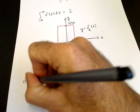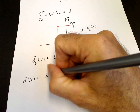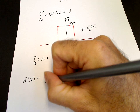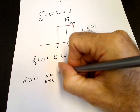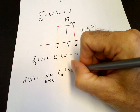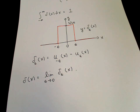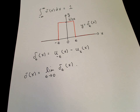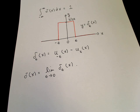The delta function is the limit as epsilon goes to zero of delta_epsilon of x. So if you have a hard time picturing the delta function itself, you can view the delta function as this limiting function. Epsilon is as small as you like, so it will have a width of 2 epsilon and a height of 1 over 2 epsilon.